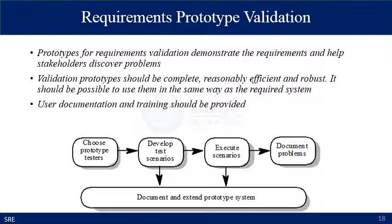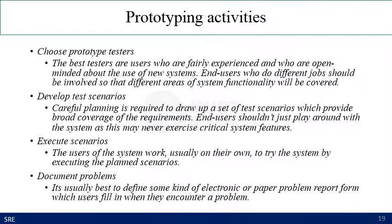The second technique for requirement validation is validation by requirement prototype. Prototypes for requirement validation demonstrate the requirements and help stakeholders discover problems. You develop a prototype, implement the requirements in it, and get feedback from stakeholders. Validation prototypes should be complete, reasonably efficient, and robust — it should be possible to use them in some way as the required system. User documentation and training should be provided to handle the prototype. In the requirement prototype phase, you choose prototype testers, who develop test cases, execute scenarios, and document problems.